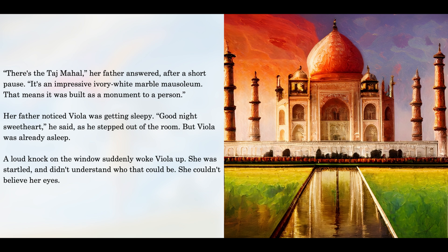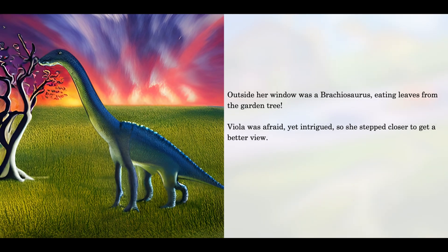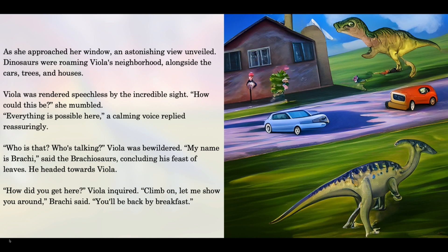A loud knock on the window suddenly woke Viola up. She was startled and didn't understand who that could be. She couldn't believe her eyes. Outside her window was a brachiosaurus, eating leaves from the garden tree. Viola was afraid, yet intrigued. So she stepped closer to get a better view. As she approached the window, an astonishing view unveiled. Dinosaurs were roaming Viola's neighborhood, alongside the cars, trees, and houses. Viola was rendered speechless by the incredible sight.